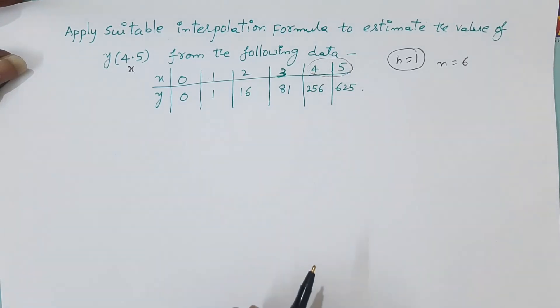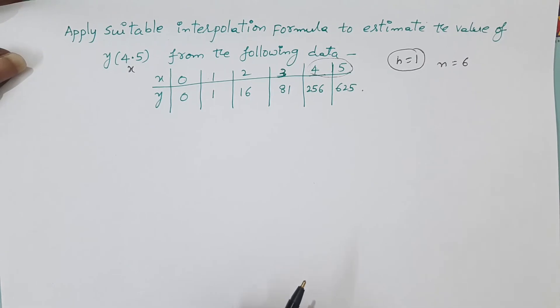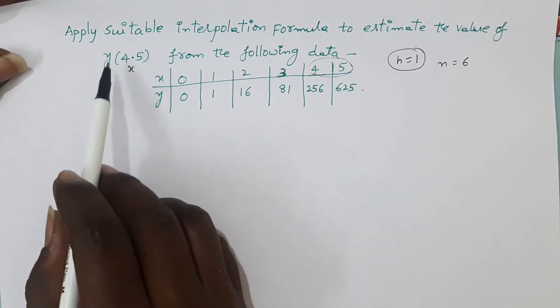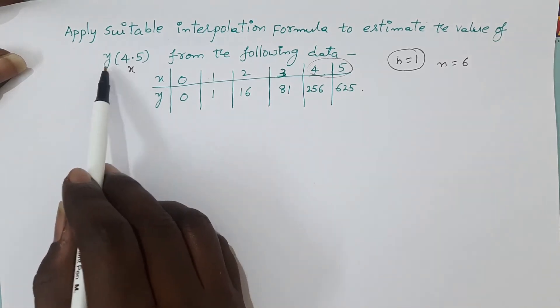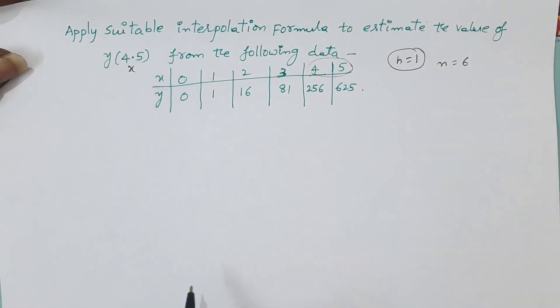That's why Newton's backward interpolation formula is the suitable interpolation formula. So in this problem, we can apply Newton's backward interpolation formula to evaluate the y value at 4.5.